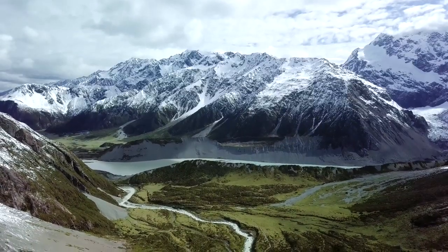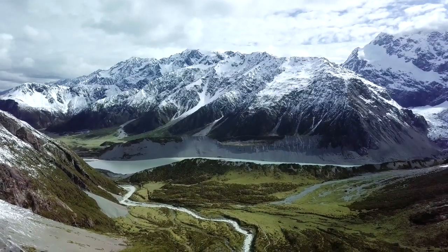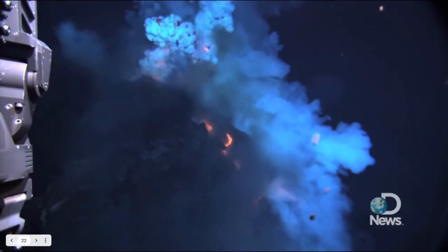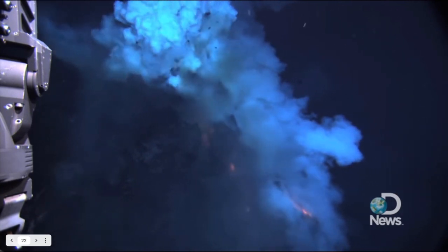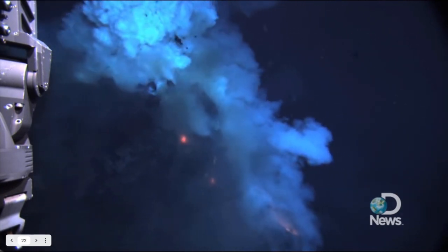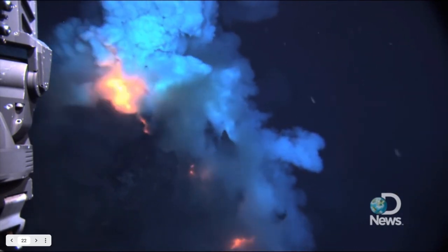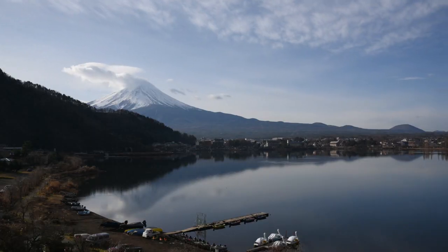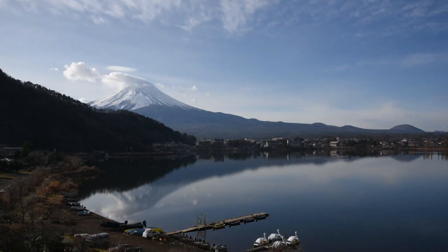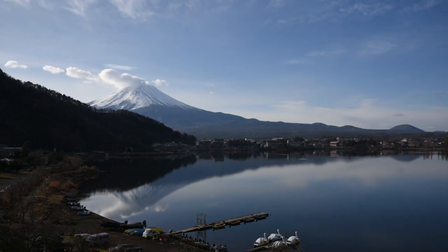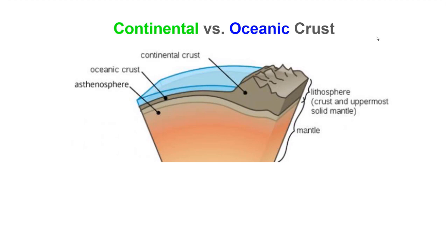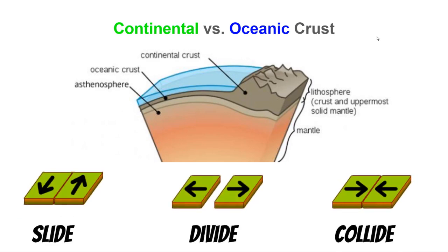Plate boundaries are the location of many of the most tremendous landforms found on our planet. Many of the geologic activities we experience on Earth's surface and the remarkable landforms we admire are greatly determined by the types of crust that are interacting along plate boundaries, and whether the crust plates are sliding along one another, dividing, or colliding.